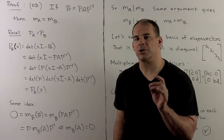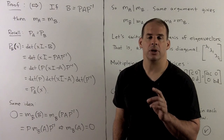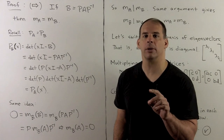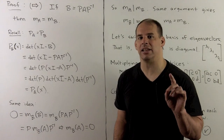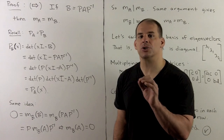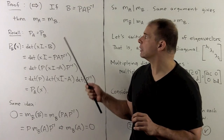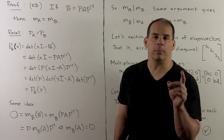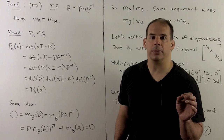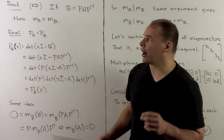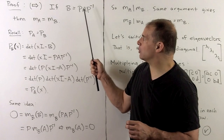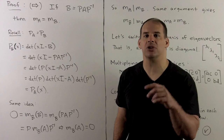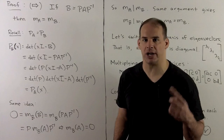For the proof, we start with the straightforward direction, assuming we have a basis of eigenvectors and wanting to show the minimal polynomial factors into distinct linear factors. First, a preliminary step: if A and B are similar, then their minimal polynomials are equal. Similarity means B equals P A P inverse, which we can think of as a change of basis for the original linear transformation.